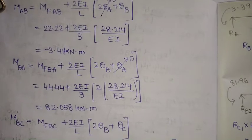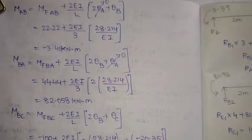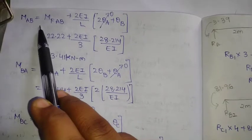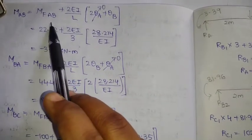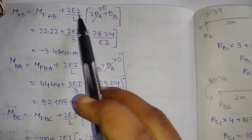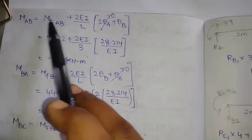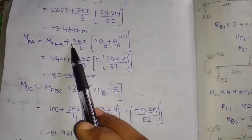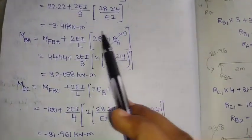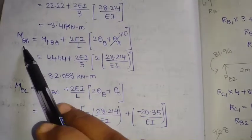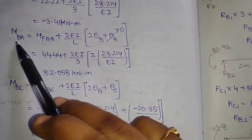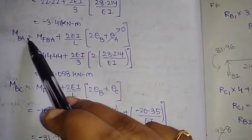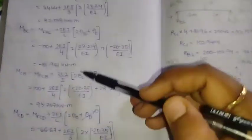Once theta B and theta C are obtained, we calculate the final end moments. The formula for any span member is: M_AB = MfAB + (2EI/L)(2·theta_A + theta_B), and M_BA = MfBA + (2EI/L)(2·theta_B + theta_A). The fixed end moments are taken from earlier calculations, and the EI and L values correspond to the respective span only. This gives us all final end moments.